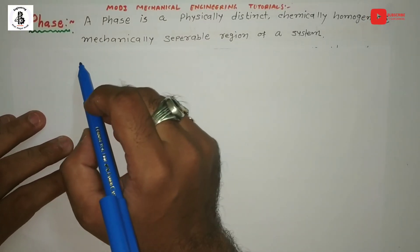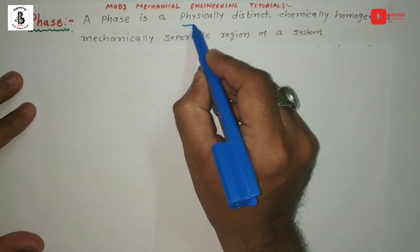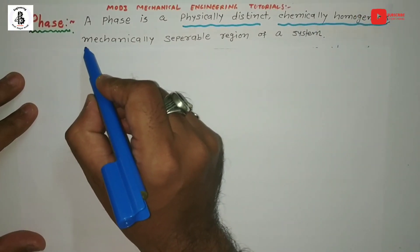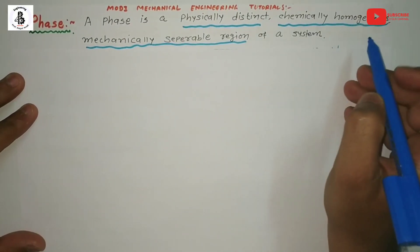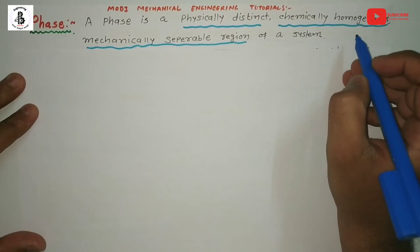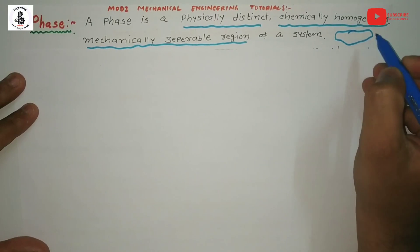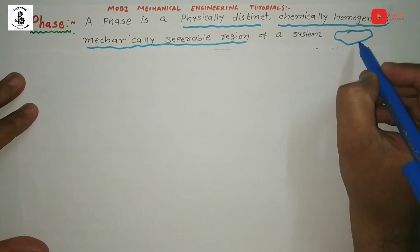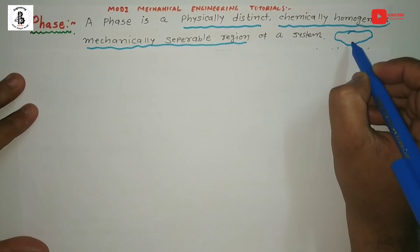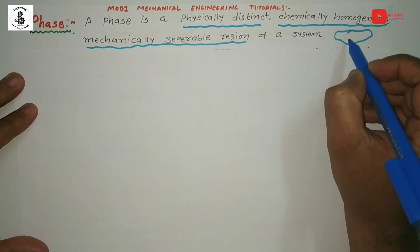The second important terminology is 'phase.' A phase is a physically distinct, chemically homogeneous, and mechanically separable region of the system. Consider a system as an isolated body. In the case of phases — for example, if it is a binary system such as copper and nickel — atoms of copper and nickel have 100% solubility in the solid state, so it is called chemically homogeneous.